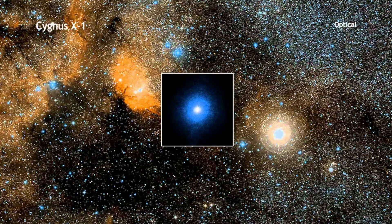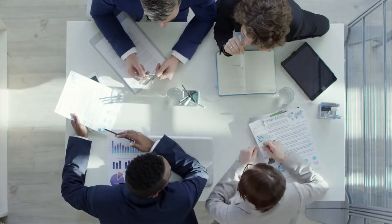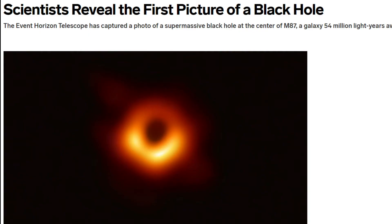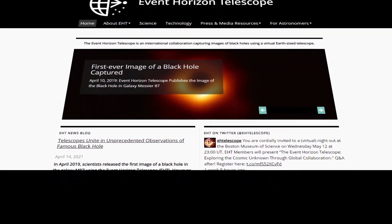But Cygnus X-1 is just one out of many black holes in our galaxy, let alone all of space. Scientists continue to research them still to this day. One of the bigger discoveries that surfaced recently was the first ever picture of a black hole. NASA accomplished this by creating a network of telescopes that basically create one big telescope.